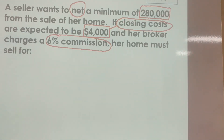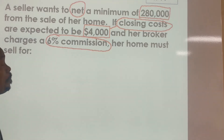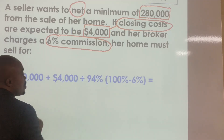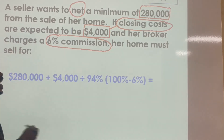So if she's going to make $280,000, we know we need to add $4,000 to $280,000, which gives us $284,000. But we know she has to pay her broker 6% commission, so we have to take that into account. We will take the $280,000 plus the $4,000 and then divide it by 94%. How do we get the 94%?